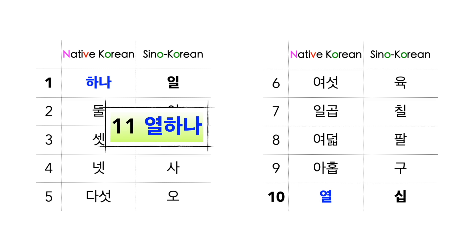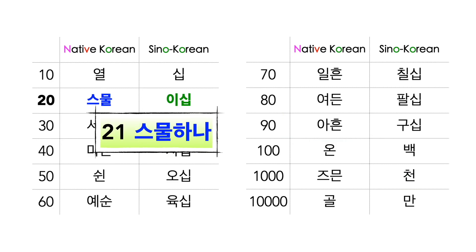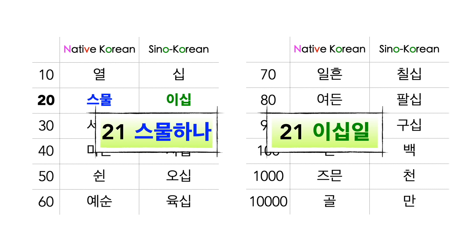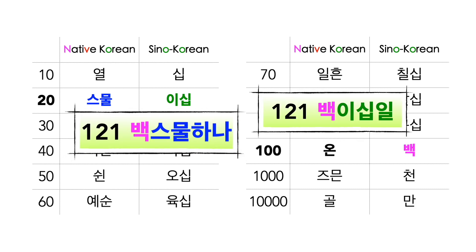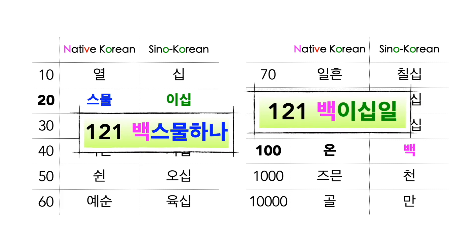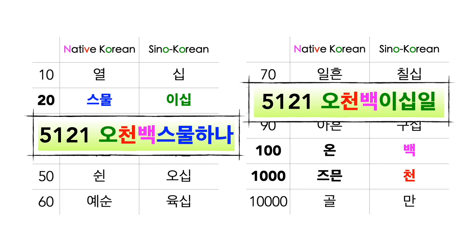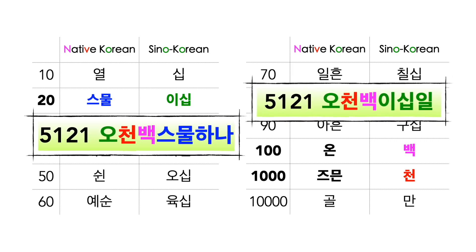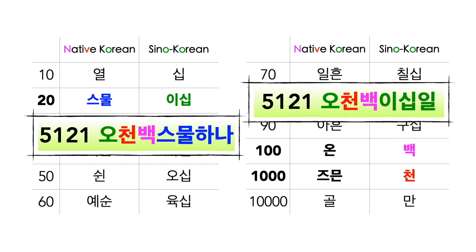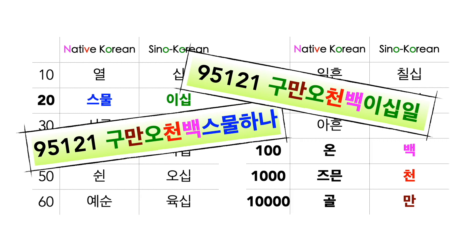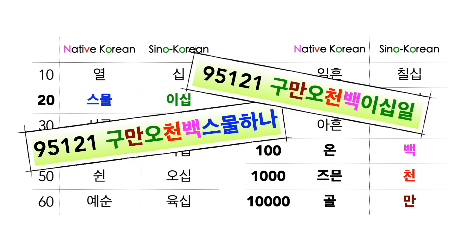Let's try a couple of examples. 11 in native Korean is 열하나, in Sino-Korean is 십일. 21 in native Korean is 스물하나, in Sino-Korean is 이십일. 5,121 in native Korean is 오천 백 스물 하나, and in Sino-Korean is 오천 백 이십 일. You'll notice that 5,000 and 100 use Sino-Korean in both. 95,121 in native Korean is 구만 오천 백 스물 하나, and in Sino-Korean is 구만 오천 백 이십 일.